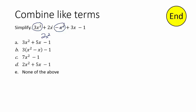Then I combine the x's, which would be these two right here. They're both positive, so I get plus 5x. All I have for this without an x is minus 1. So does this look like something? There it is. Choice D.